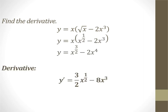This is a product of two functions. We take this first step to rewrite the term that has a root with an exponent — x to the 1/2. We can multiply it in: x to the first times here, 1 plus 1/2 is 3/2; x to the first times this gives us negative 2x to the fourth. Now when you take the derivative with the power rule, 3/2 comes down, x to the 3/2 minus 1 is 1/2. For the second term, 4 comes down, 4 times negative 2 is negative 8, x to the 4 minus 1 is 3.